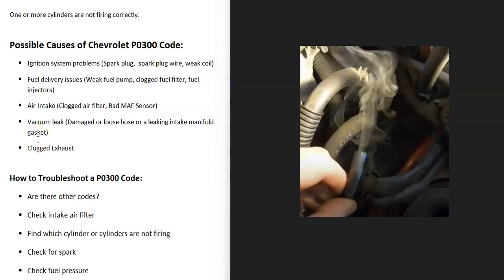Another cause can be a vacuum leak — a damaged or loose hose going into the intake manifold. Inspect around the intake manifold for any loose hoses, because any leaks can throw the sensors off. One method to find a vacuum leak is to use a smoke machine: feed smoke into the air intake and wherever it comes out, that's where the leak is.